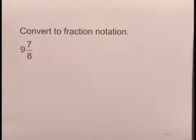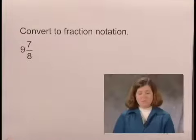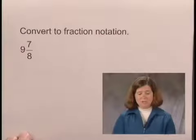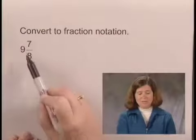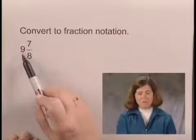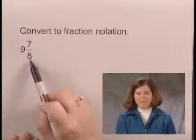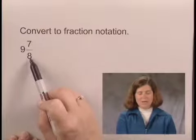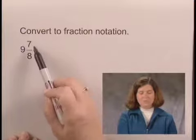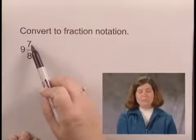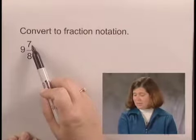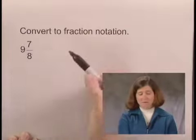In this exercise, we'll convert the mixed numeral 9 and 7 eighths to fraction notation. In order to convert to fraction notation, we will multiply 9, the whole number, times the denominator 8, which is 72, and add that to the numerator 7. 72 plus 7 is 79.